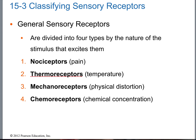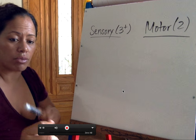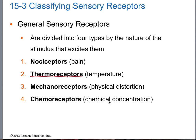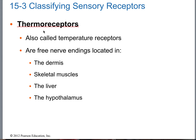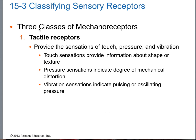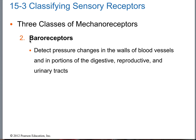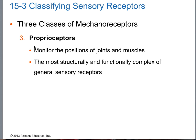Nociceptors are for pain. Thermoreceptors are for temperature. Mechanoreceptors are for physical distortion or movement — if I push against the skin, that's a mechanoreceptor. Chemoreceptors are for chemical changes — a pH change inside the blood will be detected by chemoreceptors. Tactile receptors are for touch; baroreceptors are for pressure; proprioreceptors monitor muscle function — muscle spindle fiber and Golgi tendon organ.